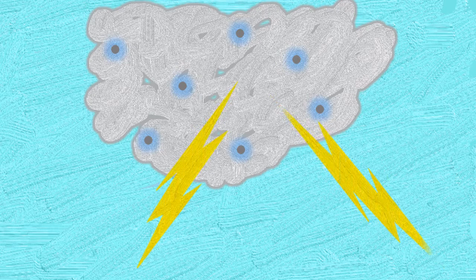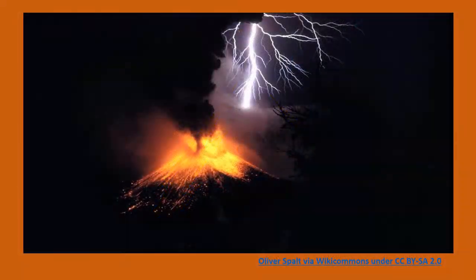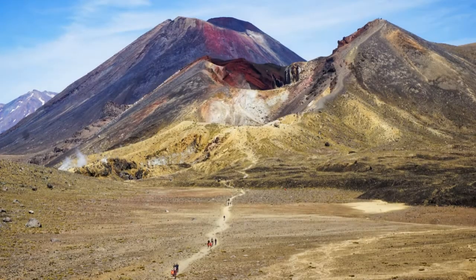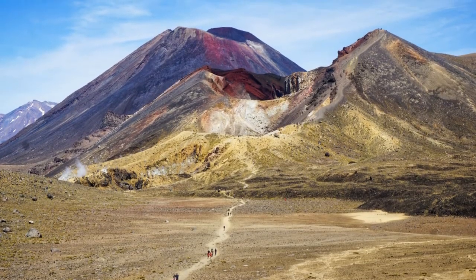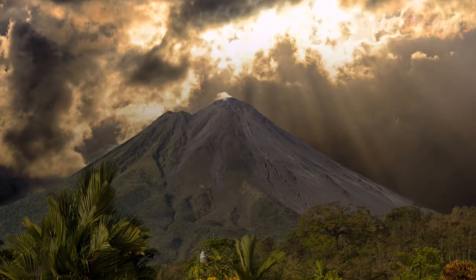Another thing that can happen to the particles inside the ash cloud is that they can move around a lot. This effect can sometimes cause lightning. Look at this picture of a lightning bolt coming out of the ash cloud. For hundreds of millions of years, volcanoes have been forming most of the Earth's surfaces.